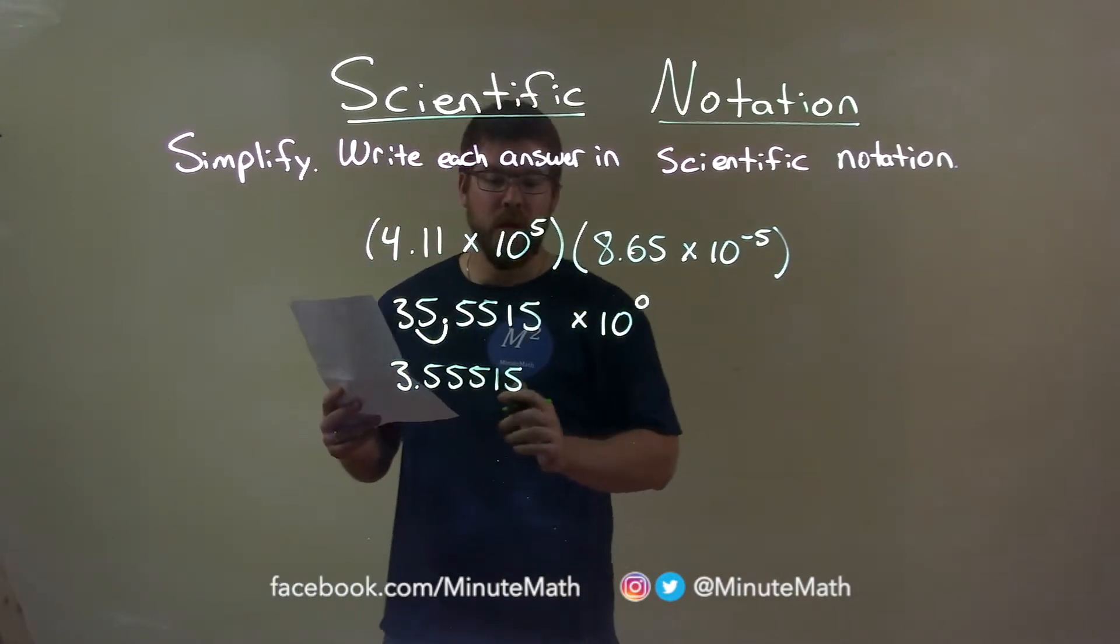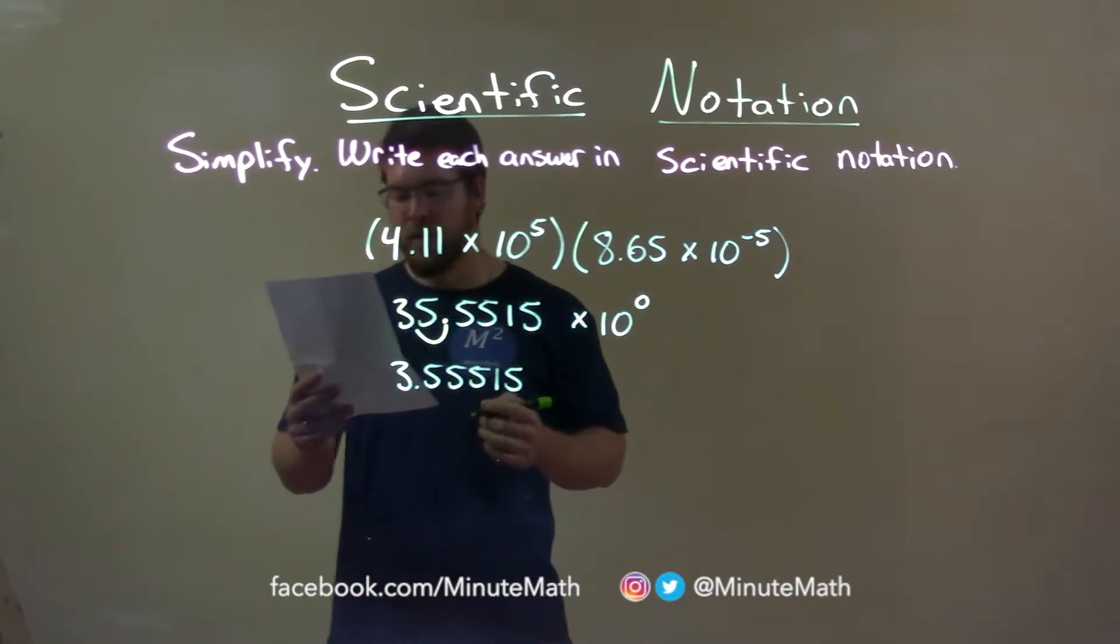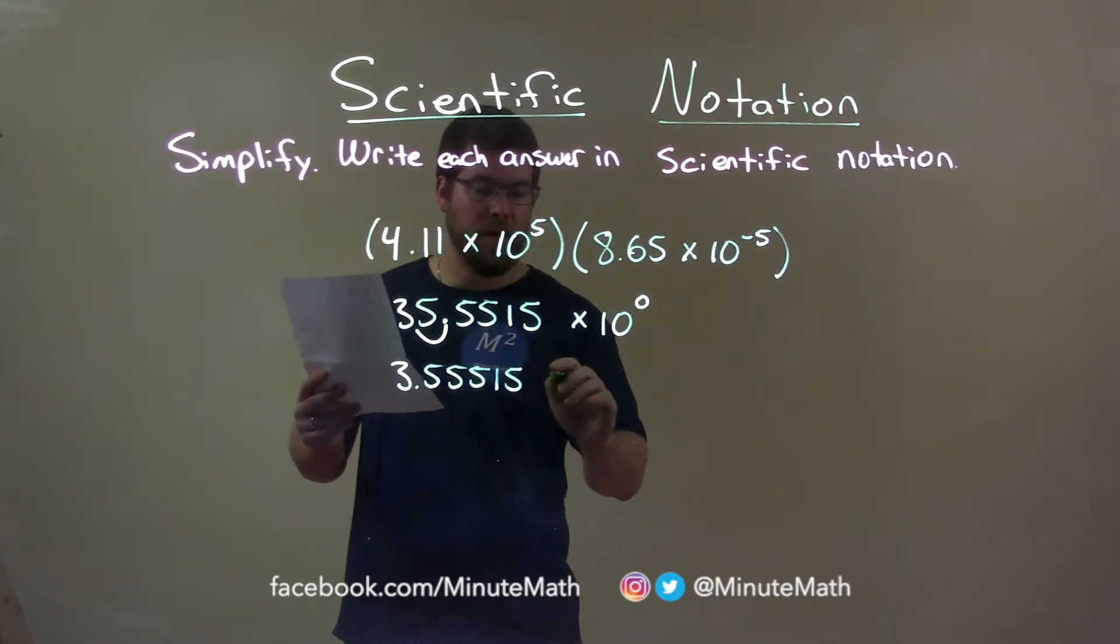But then we have an issue. We need to counteract that decimal. The decimal went one spot to the left, so that means we have to multiply this by 10 to the 1st power.